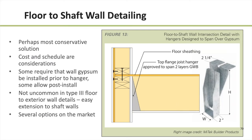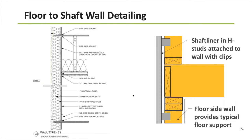Conversation with the authority having jurisdiction on these types of details early on in design is always a good idea to avoid surprises down the line. Looking at conditions of shaft liner systems: the image on the right shows that these shaft liner systems, even though the code doesn't require you to completely bypass the floor structure, just by nature of how these systems are installed, that's essentially what they're doing.